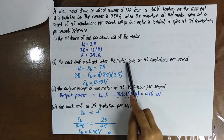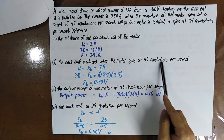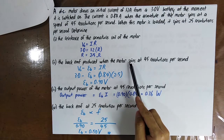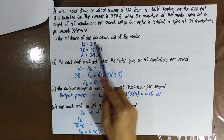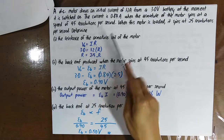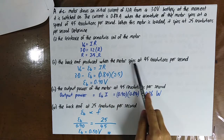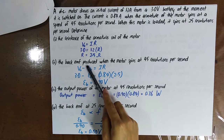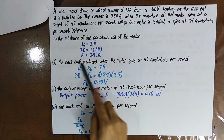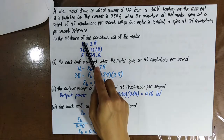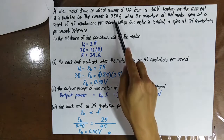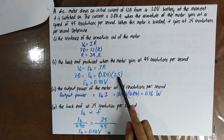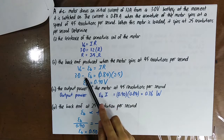Find the back EMF when the motor spins at 45 revs. When the motor is spinning, there is now a back EMF. The potential difference drops from V₀ to V₀ − EB, so the current drops. With the current now 0.84 A and the resistance already found, you can find the back EMF.